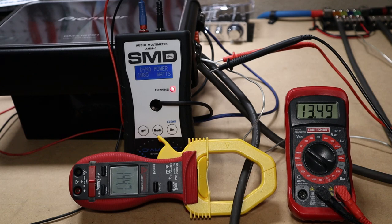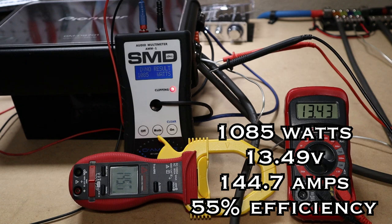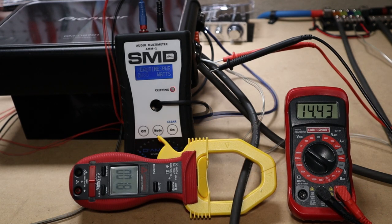With the OFC we ended up with 1085 watts, 13.49 volts, pulled 144.7 amps, leaving us 55% efficient.